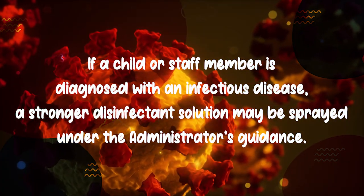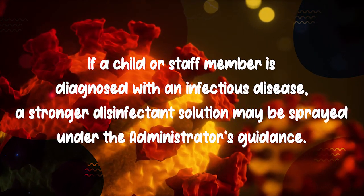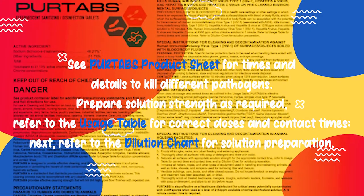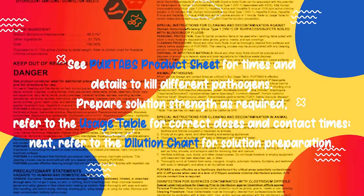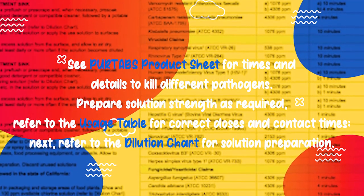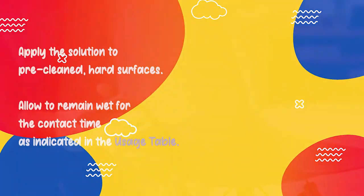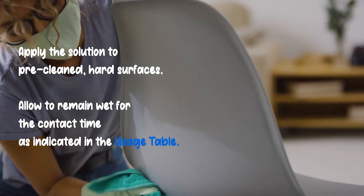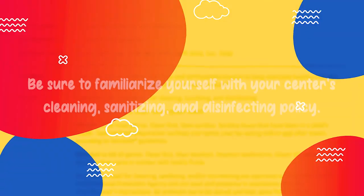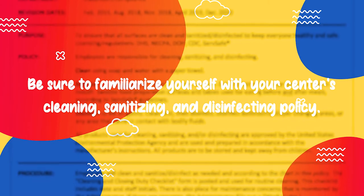If a child or staff member is diagnosed with an infectious disease, a stronger disinfectant solution may be sprayed under the administrator's guidance. See the Pure Tabs product sheet for times and details to kill different pathogens. Prepare solution strength as required, refer to the usage table for correct doses and contact times, and refer to the dilution chart for solution preparation. Apply the solution to pre-cleaned hard surfaces and allow it to remain wet for the contact time indicated in the usage table. Be sure to familiarize yourself with your center's cleaning, sanitizing, and disinfecting policy.